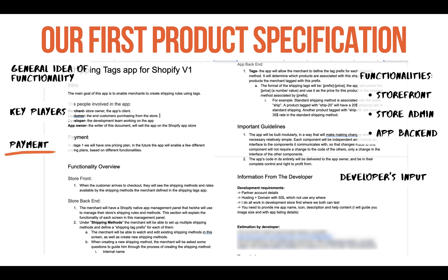Below that comes payment and billing — this is where you decide how much and how you're going to charge for your app. You don't have to decide now; you can just list a few pricing plan ideas. We'll discuss payment plans more in future lessons. Below that comes the main functionality, where you break down everything there is to know about the app: different stages, options, drop-downs and their options, and how both the front-end and back-end should look and behave.